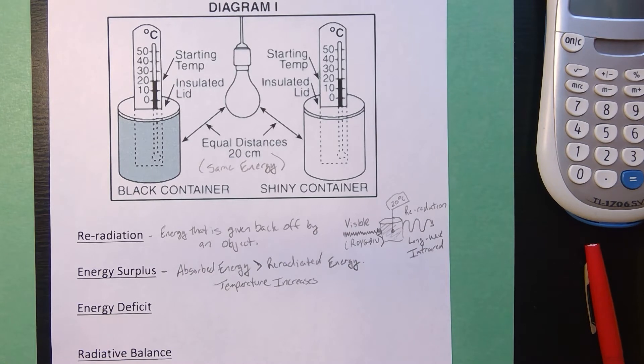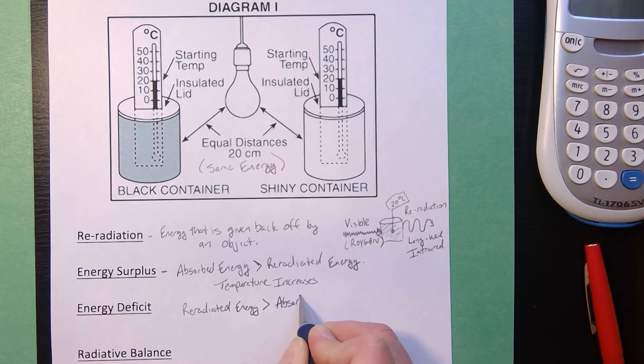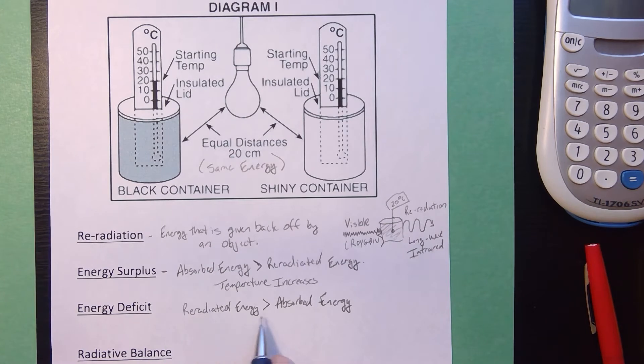If there's an energy deficit, deficit means you don't have enough of something. In an energy deficit, the re-radiated energy is greater than the absorbed energy. So the amount of energy released to the environment is greater than the amount of energy taken in from the environment. You'll know an object is in an energy deficit if you see that the temperature decreases.